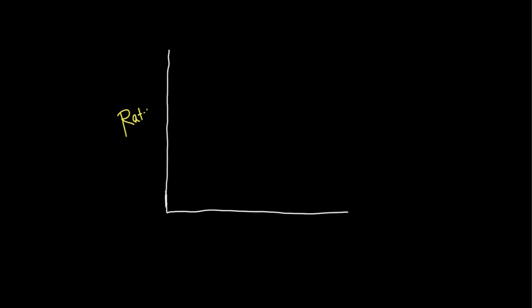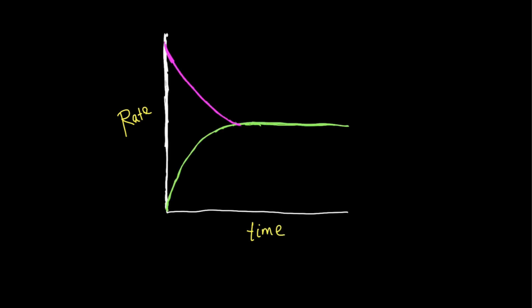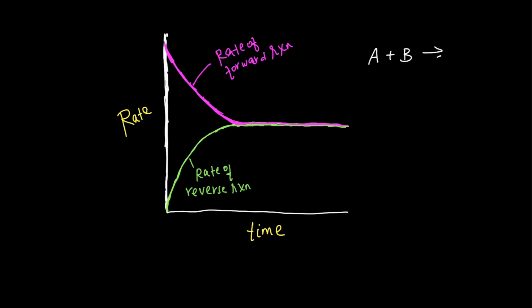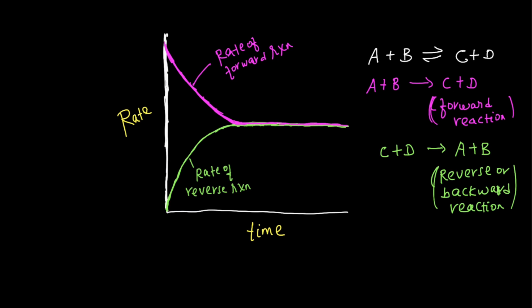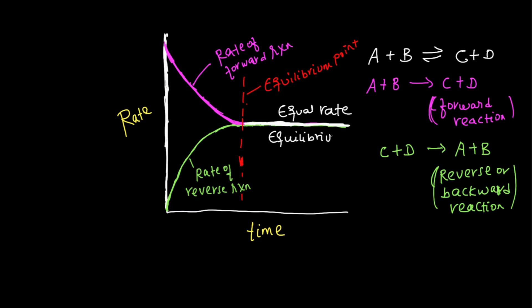This is the rate versus time graph. The graph shows the rate of the reverse reaction and the rate of the forward reaction. As the forward reaction produces products, and the reverse reaction consumes them, the two rates converge. When the rate of forward reaction equals the rate of reverse reaction, equilibrium is achieved.